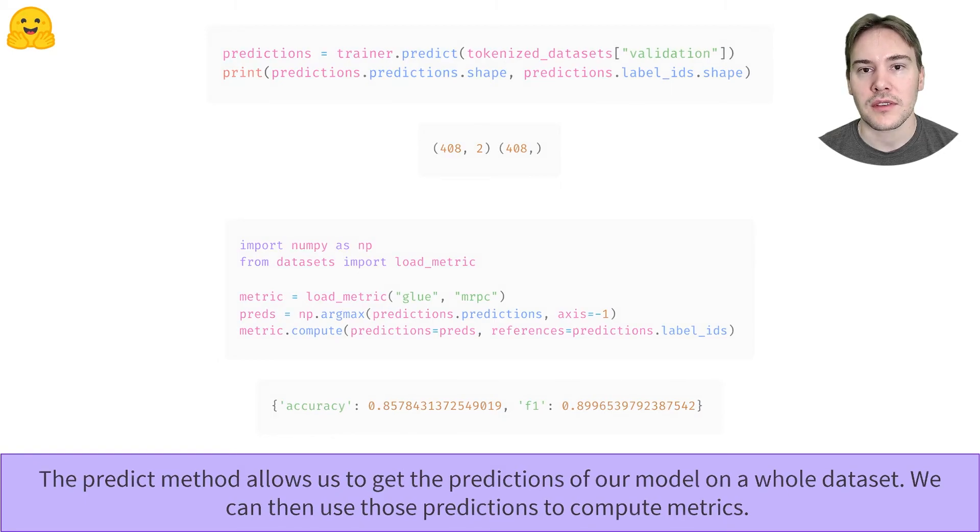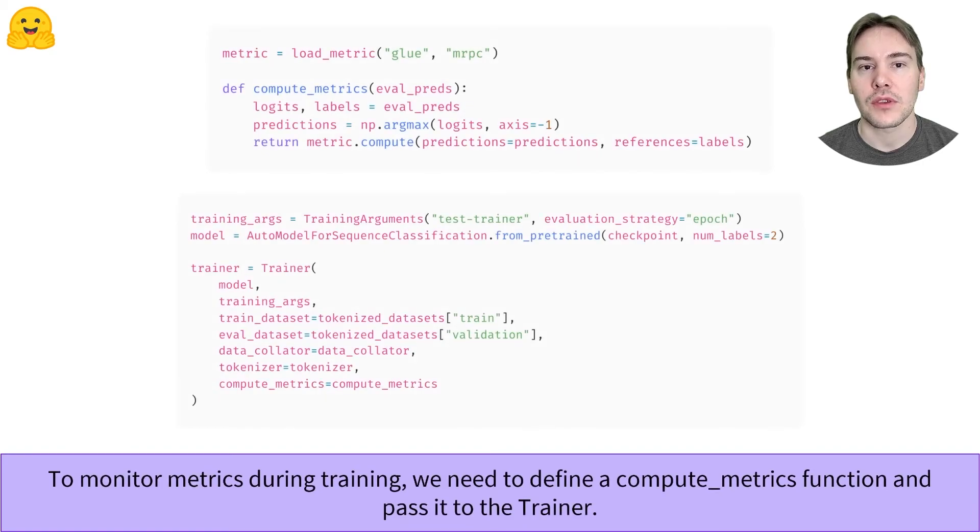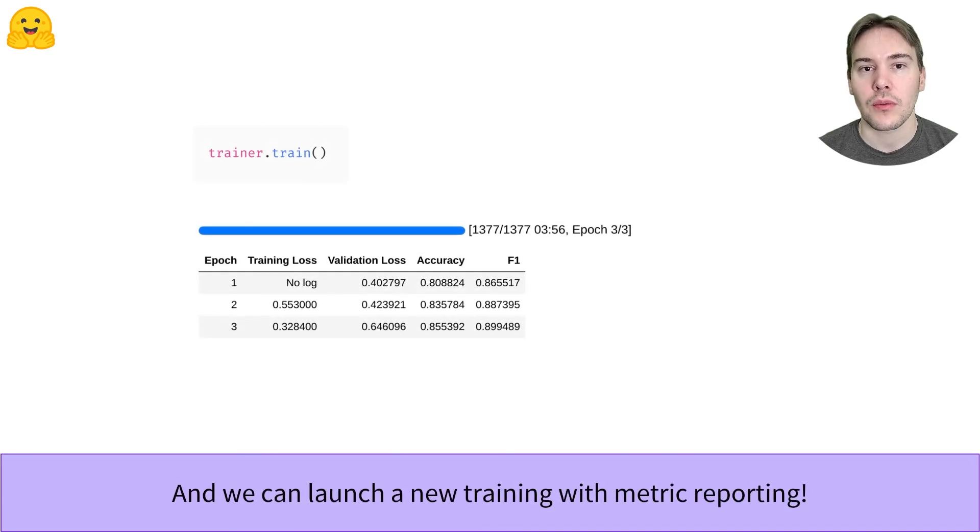To monitor the evaluation metrics during training, we need to define a compute_metrics function that does the same steps as before. It takes a named tuple with predictions and labels, and must return a dictionary with the metrics we want to keep track of. By passing the epoch evaluation strategy to our training arguments, we tell the Trainer to evaluate at the end of every epoch. Launching a training inside a notebook will then display a progress bar and complete the table you see here as you pass every epoch.